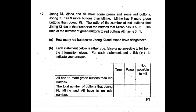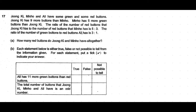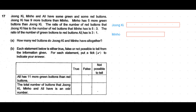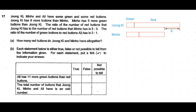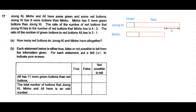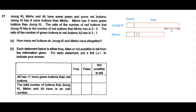Part A of the question is: how many red buttons do Junki and Minho have altogether? Let's start drawing the model. Junki has nine more buttons than Minho. Minho has five more green buttons than Junki, so we draw the green buttons — Minho has more green buttons. Let's mark them in green color, and that is five more than the green buttons that Junki has.